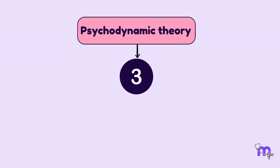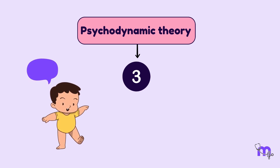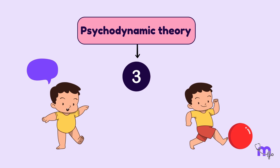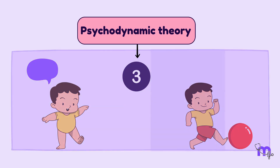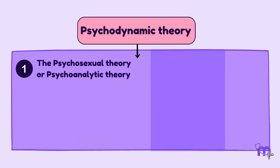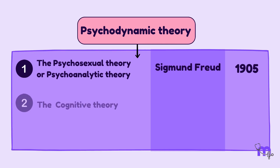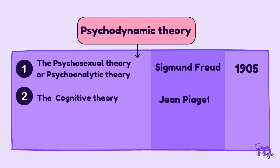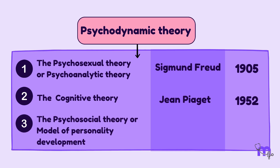First, we have the three psychodynamic theories to understand how unconscious thoughts, emotions, and early experiences shape behavior and personality. The Psychosexual Theory by Sigmund Freud (1905), the Cognitive Theory by Jean Piaget (1952), and the Psychosocial Theory of Personality Development by Erik Erikson (1963).